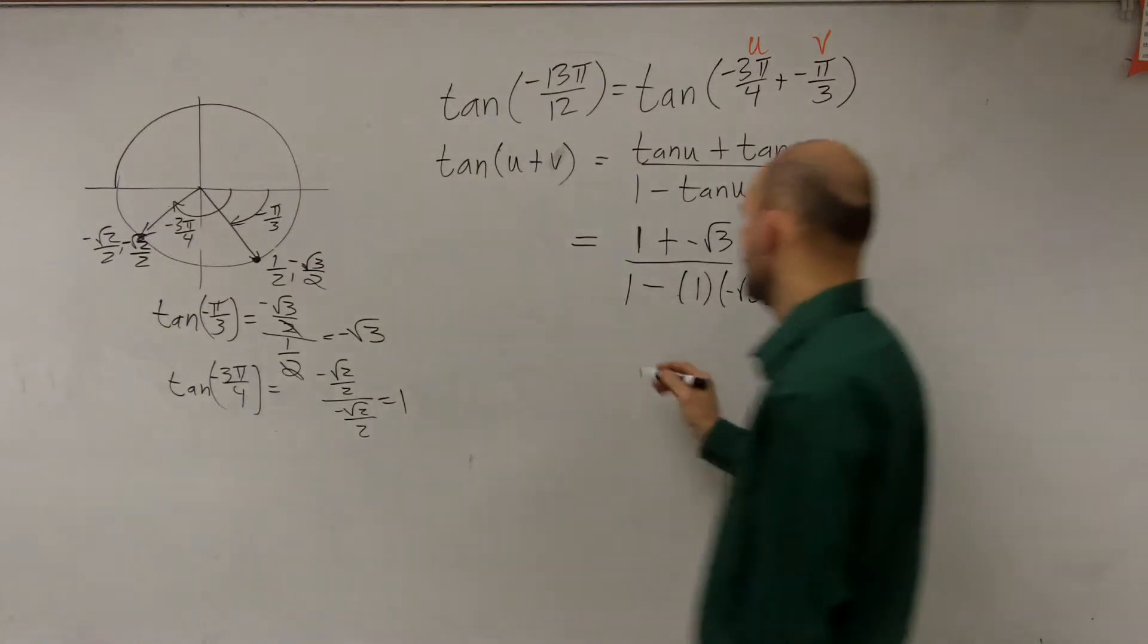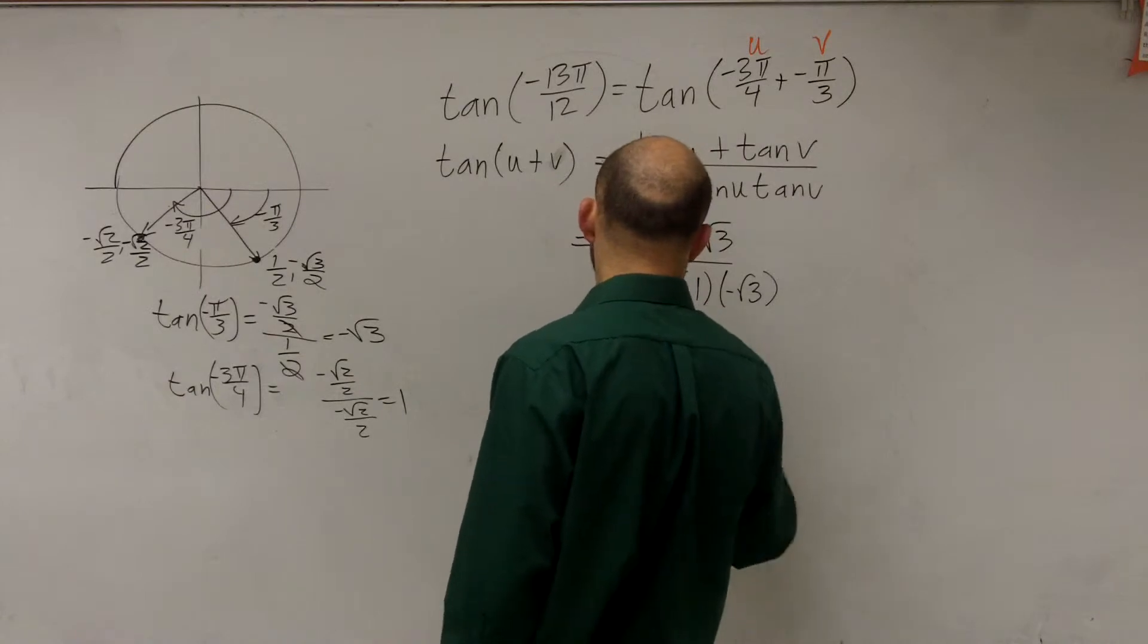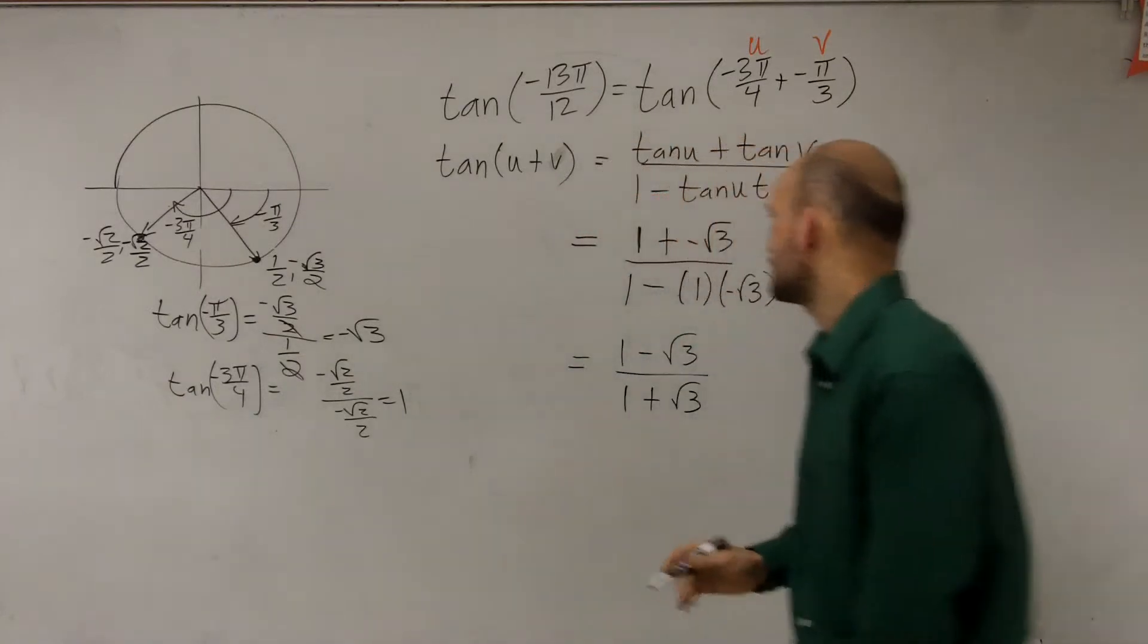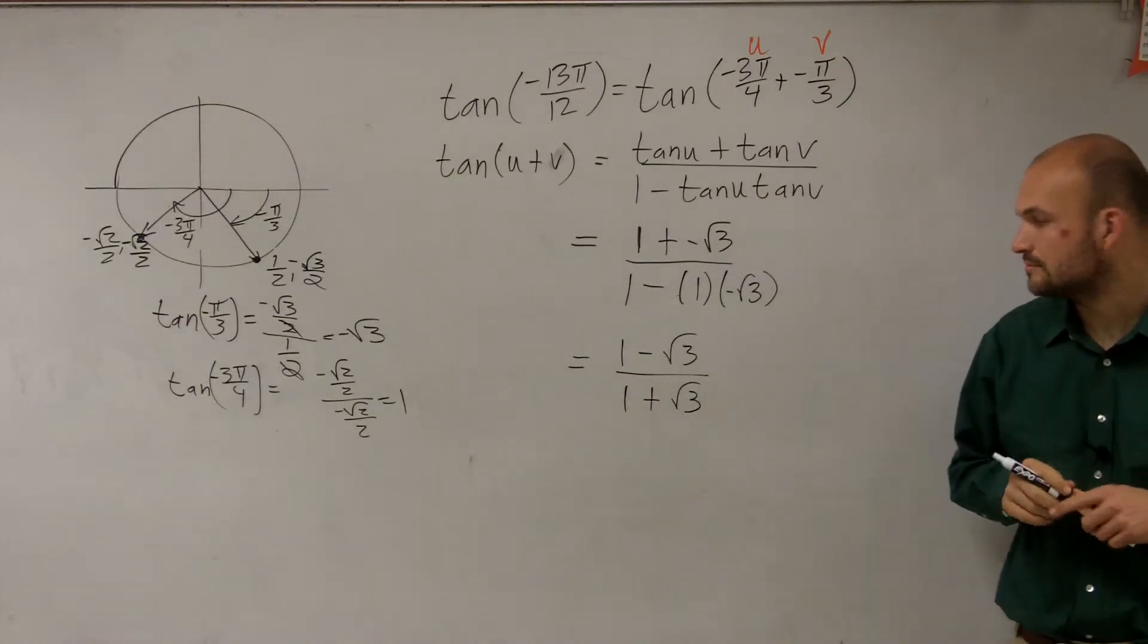Now let's simplify. What we have is 1 minus square root of 3 over 1 plus square root of 3, because my two subtraction signs are going to make a positive.